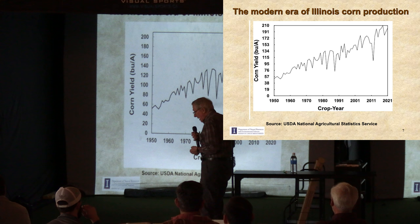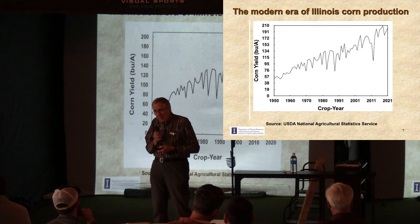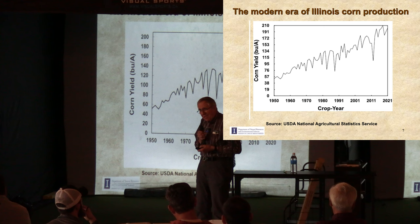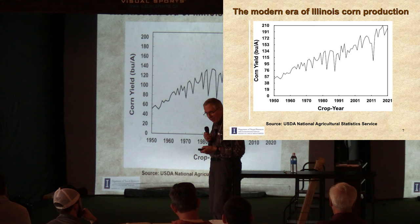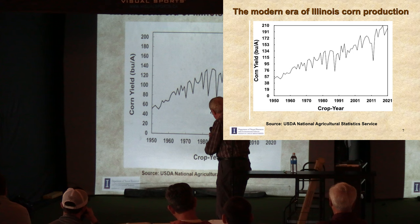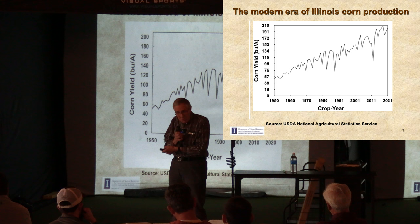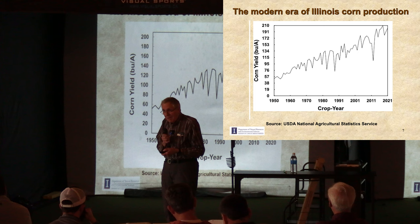Looking at the effects of the past 70 years, we see statewide average corn yield data for Illinois showing a tremendous upward climb. It's one of agriculture's great success stories — on land that used to grow 50 bushels an acre, farmers are now routinely growing 200 or more. The reasons for that increase are many: genetics play a huge role, management practices, but nitrogen fertilizers get a lot of the credit.